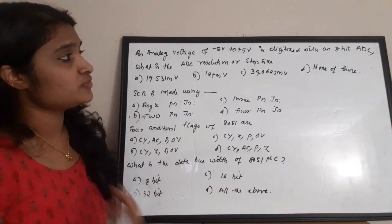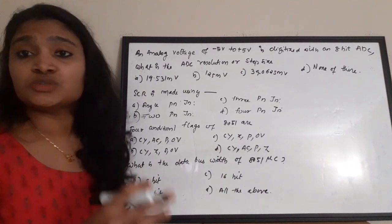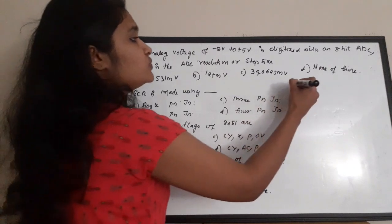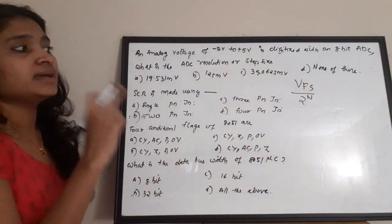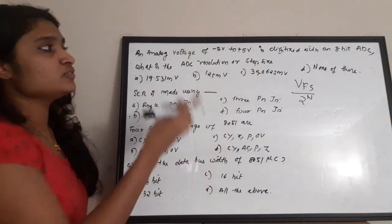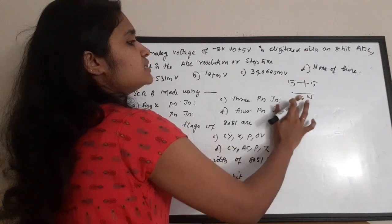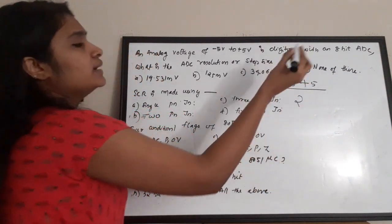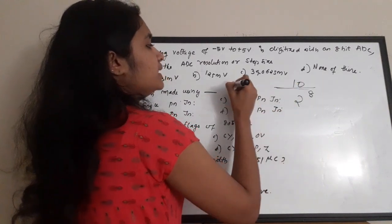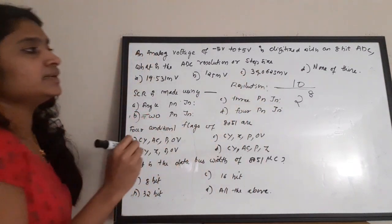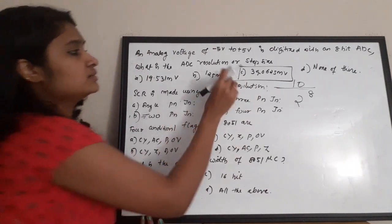Next question: an analog voltage of −5 V to +5 V is digitized with an 8-bit ADC. What is the ADC resolution or step size? Resolution = V_full_scale / 2^n. The full-scale voltage is 5 − (−5) = 10 V, and n = 8. So resolution = 10 / 2^8 = 10 / 256 ≈ 39.0625 mV. The correct answer is option C.